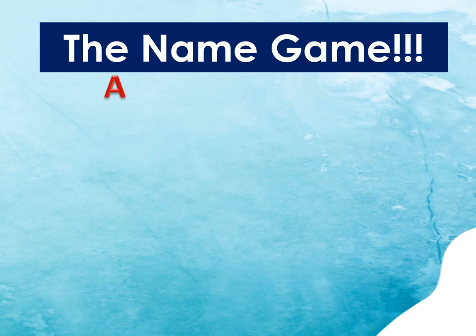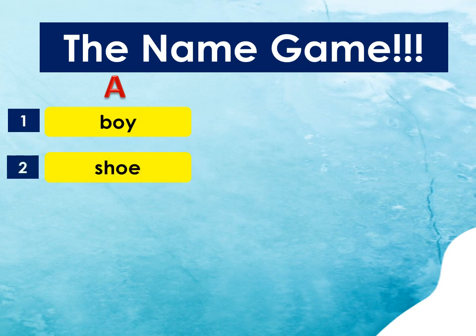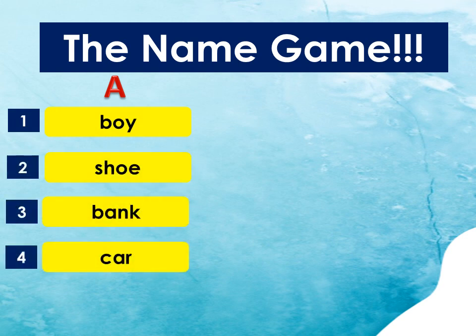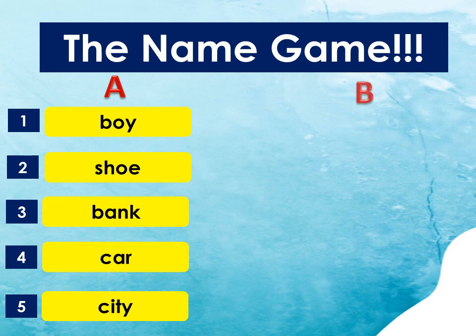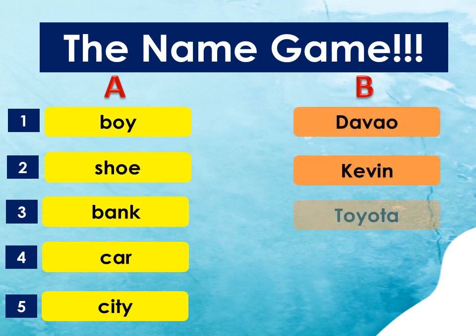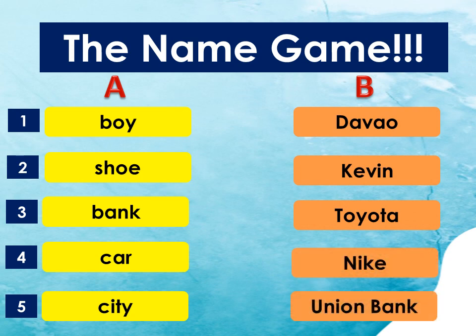We have here different sets of nouns. In column A, we have Boy, Shoe, Bank, Car, City. In column B, we have Davao, Kevin, Toyota, Nike, Union Bank.